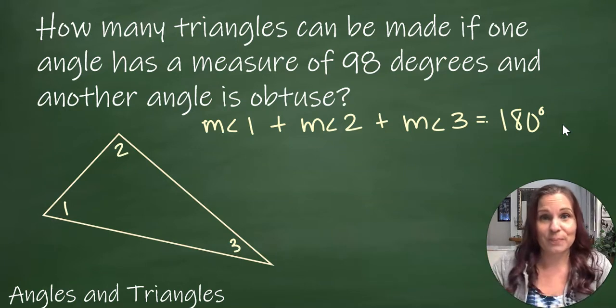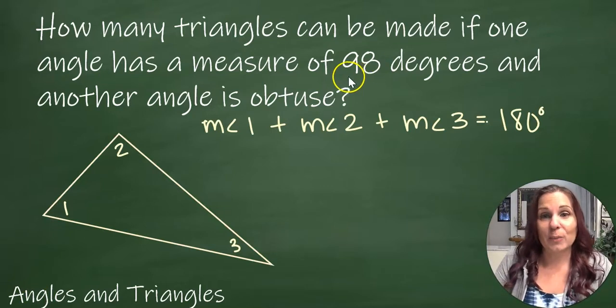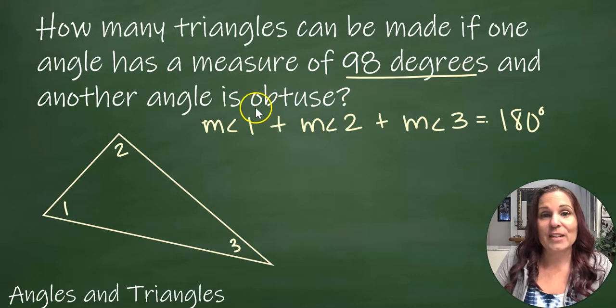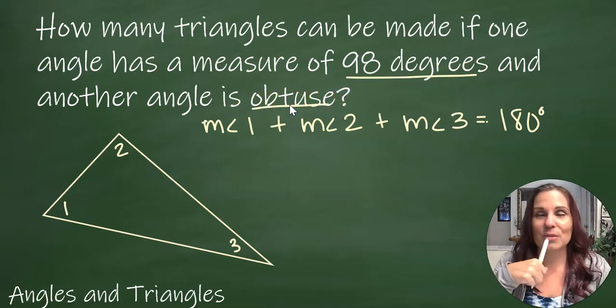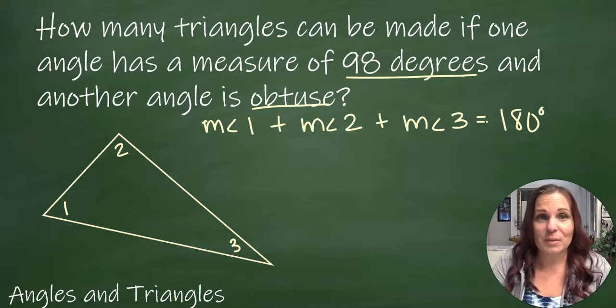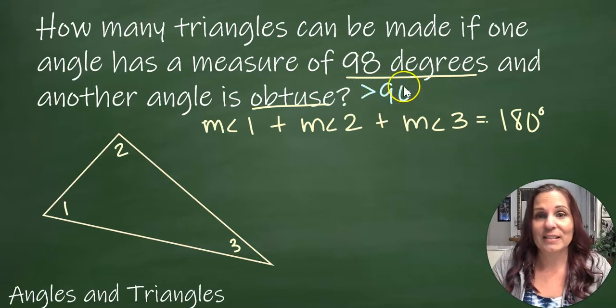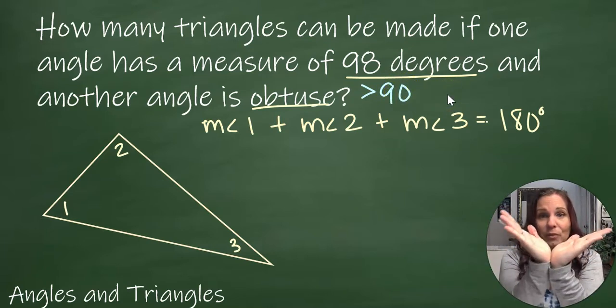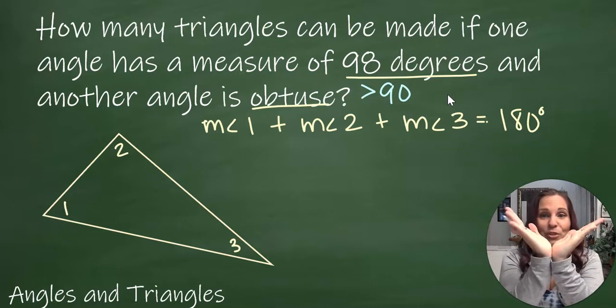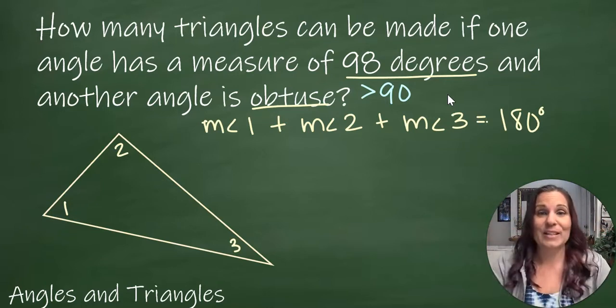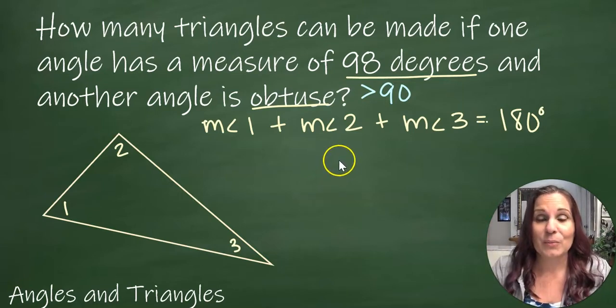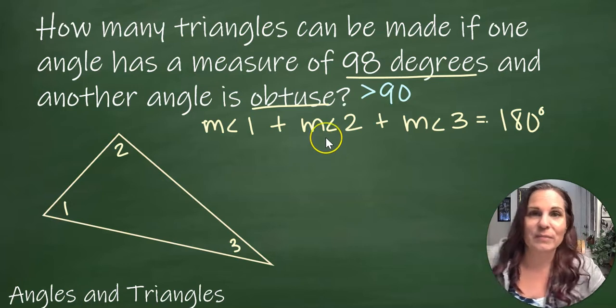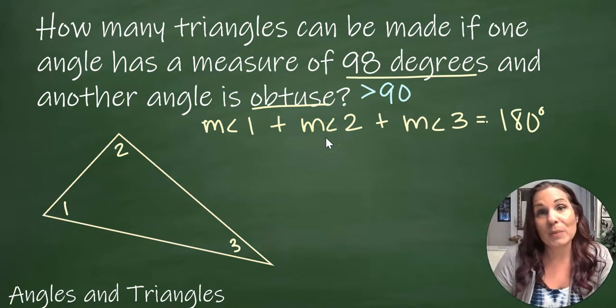So now let's look at this question. If we know that one angle measures 98 degrees and another is obtuse. Obtuse means that the measure of the angle is more than 90. So if you think of a 90 degree angle like an L, then obtuse is widening that angle, it's making it bigger. So the smallest obtuse angle that's a whole number I can think of would be 91.